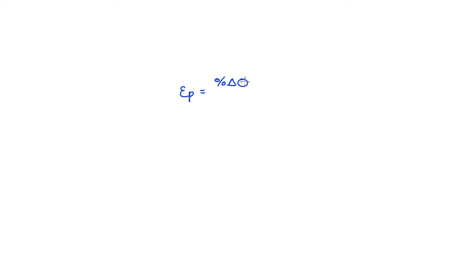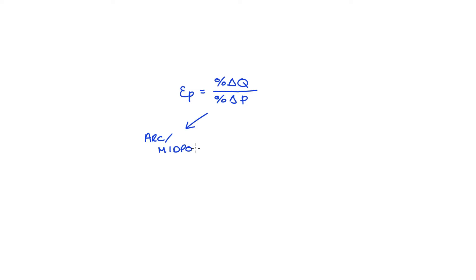We have a ratio of the percentage change in quantity demanded divided by the percentage change in price. Now there are two interpretations of this ratio. Our first interpretation will get us to what we call the arc or the midpoint elasticity formula. The second interpretation will get us to what we call the point elasticity formula.